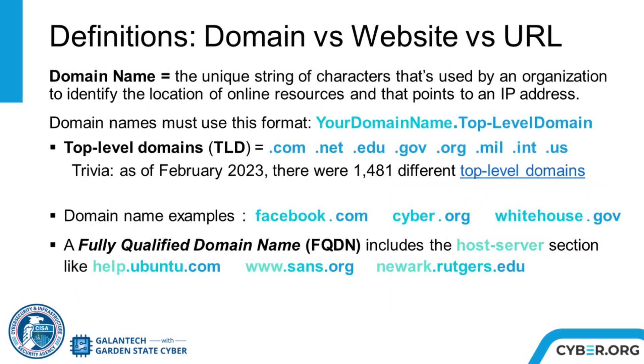A domain name is the unique string of characters used by an organization to identify their internet-based resources. It must follow a specific format and must be globally unique. Domain names are set up with your unique domain name followed by a .topleveldomain. For example, cyber.org — where cyber is the domain name with .org as the top-level domain.